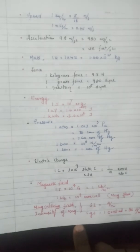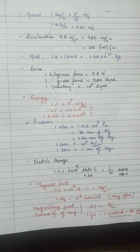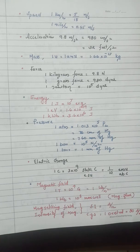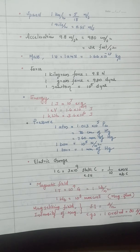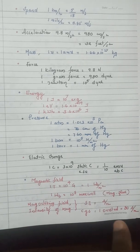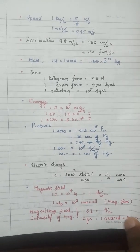For electric charge: one coulomb equals 3 × 10⁹ electrostatic units or 1/10 electromagnetic units. For magnetic field units: the SI unit is tesla and the CGS unit is gauss. Magnetic flux is measured in weber (SI) and maxwell (CGS). The magnetizing field SI unit is ampere per meter, CGS unit is oersted, where one oersted equals 80 ampere per meter.